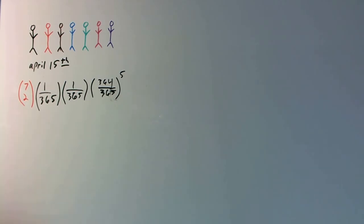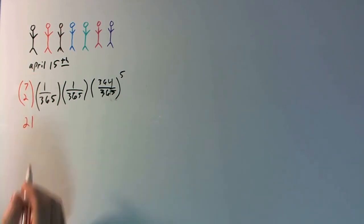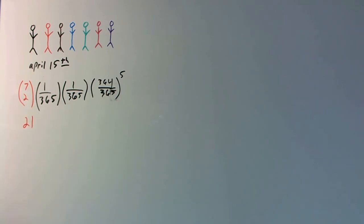So 7C2 is obviously 21. And I'm assuming that you know how to calculate NCR and NPR. And then you're going to get 21 times, in this case, let me change the marker here, 21 times.